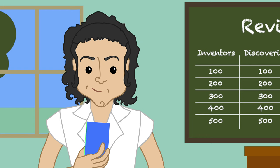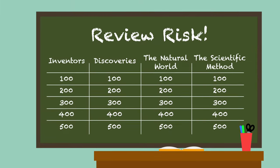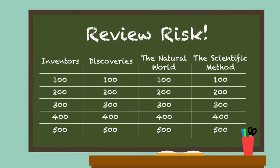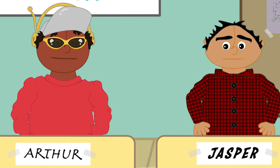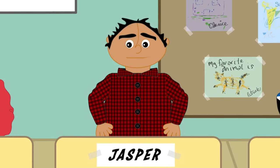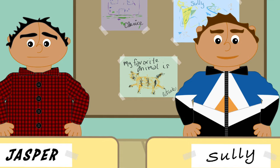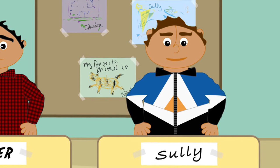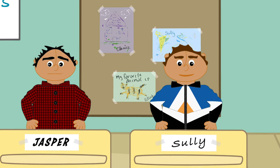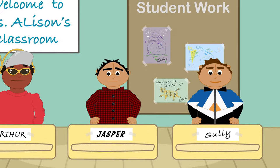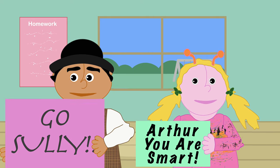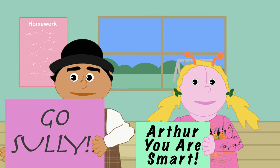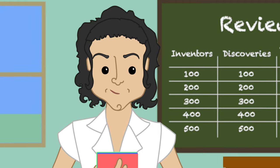First, I'll arrange my review questions into categories and by difficulty. The more challenging the question, the more points it'll be worth. Then, I'll divide my class into three teams and have each team send a representative up to my contestant podiums. I'll set a time limit for each round and let this group of students solve as many clues as possible. When the time's up, each team will send up a new representative.